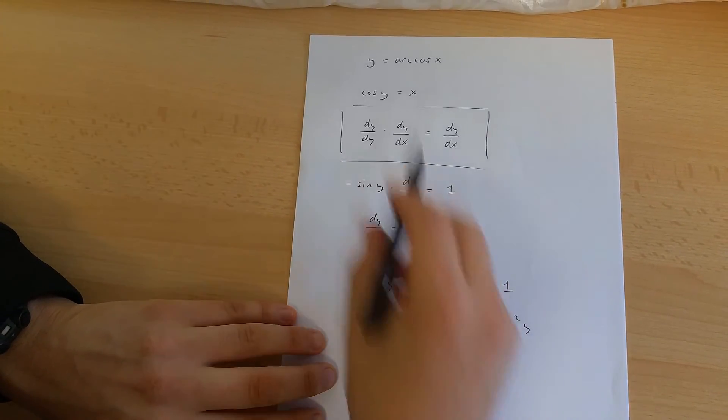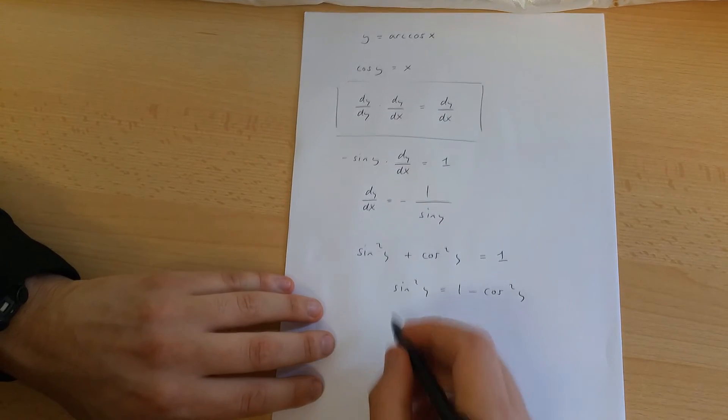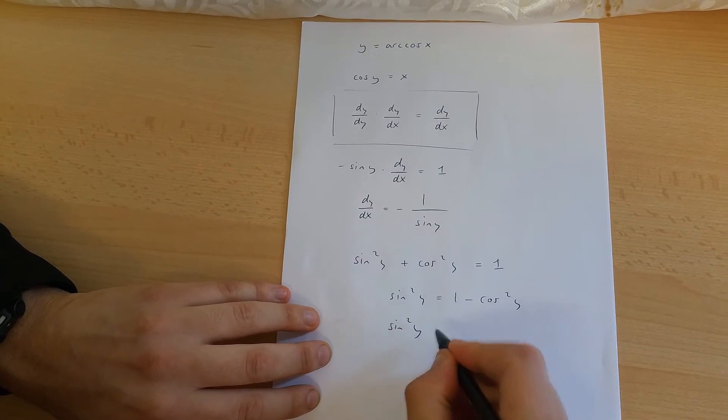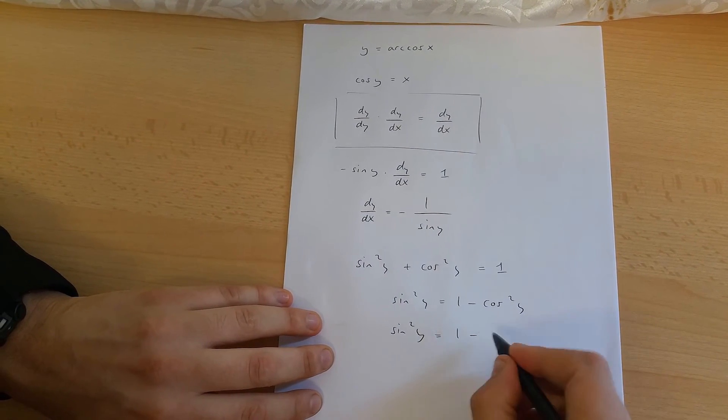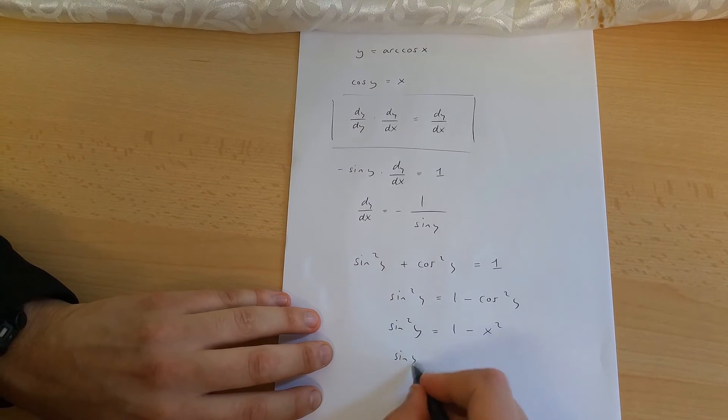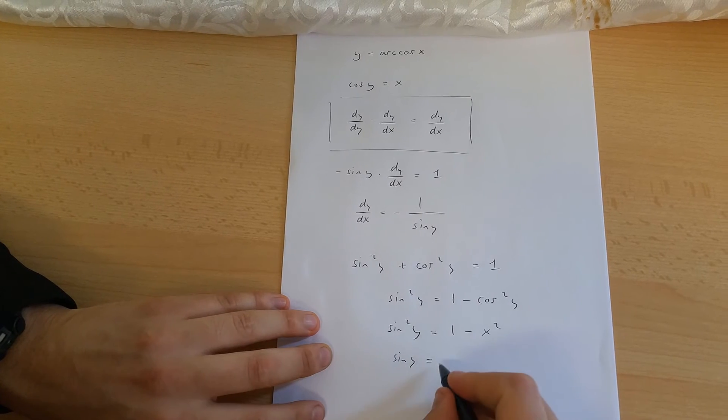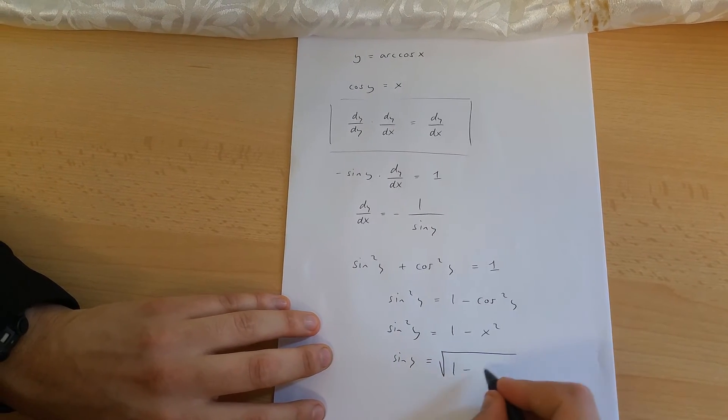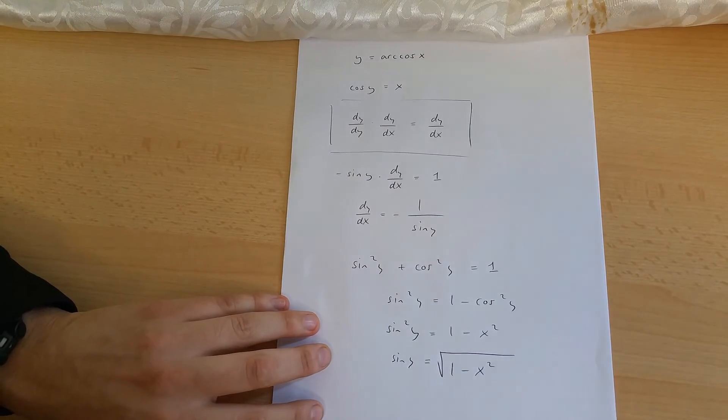But cos y is actually equal to x. So sine y squared is equal to 1 minus x squared. And this means that sine y is equal to the square root of 1 minus x squared.